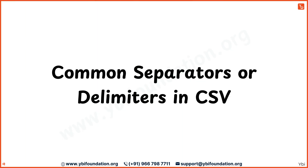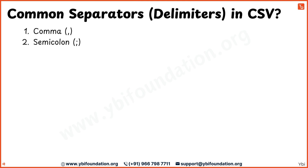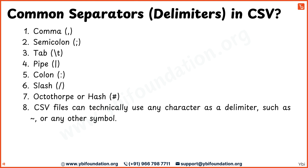Now let's understand what the commonly used separators or delimiters in CSV files are. CSV files can use various separators or delimiters. The common separators are: comma, semicolon, tab, pipe, colon, slash, and hash. CSV files can technically use any character as a delimiter.